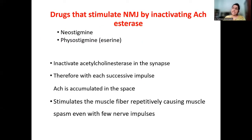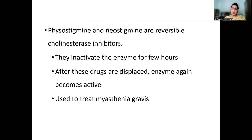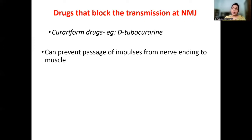The second group of drugs inactivate acetylcholinesterase. Commonly used drugs include neostigmine, physostigmine, and other stigmine groups. They inactivate acetylcholinesterase in the synapse, so with each successive impulse, acetylcholine accumulates in the synaptic space and repetitively causes muscle contraction even with a few nerve impulses. These are reversible cholinesterase inhibitors — they inactivate the enzyme for a few hours after which the enzyme becomes active again. They are used to treat myasthenia gravis, a neuromuscular junction disorder.